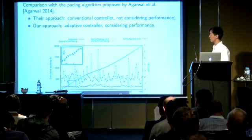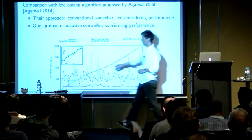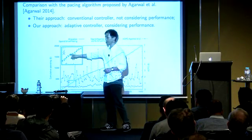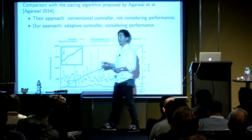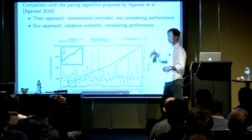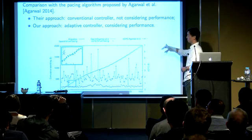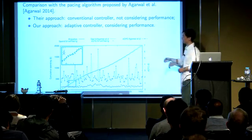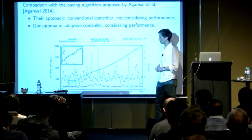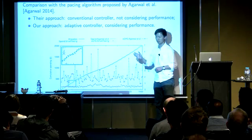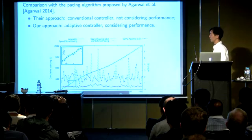Another interesting observation is that if you zoom in and look at the actual accumulative spending pattern, their approach shows fluctuations around the accumulative spending curve. Because we use an adaptive controller, the spending curve of our algorithm is much smoother than theirs.